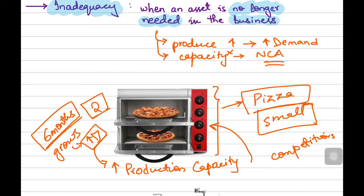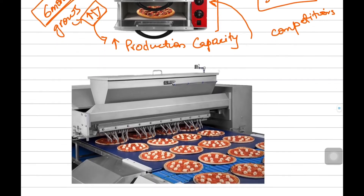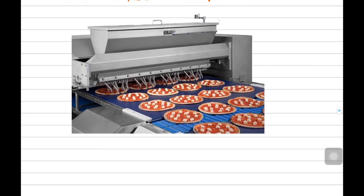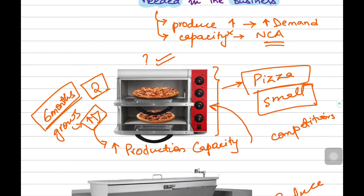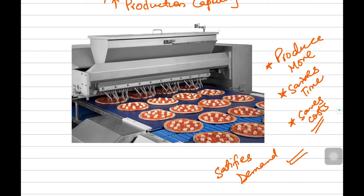Now, the problem here is not in the ovens — the ovens are fine, the non-current asset is doing fine — but just because the business has now expanded and grown, it would prefer moving towards a larger size of machinery that can produce more, save time, and save costs as well, and most importantly satisfy the demands of customers by producing more and on time. So this is one of the reasons that comes under economic factors: just because the business has increased, expanded, and grown, they might want to shift towards larger or mass production type of machinery.